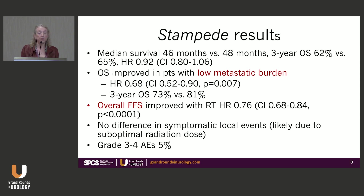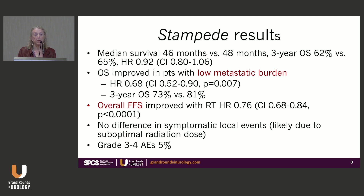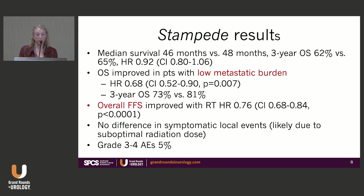They found median survival was the same in both arms — 46 versus 48 months — and three-year overall survival was 62% versus 65%, with no overall difference from treating the prostate with radiation. However, overall survival was improved in patients with low metastatic burden, with a hazard ratio of 0.68. Three-year overall survival was 73% with ADT alone versus 81% if you treated the prostate, and overall failure-free survival was also improved with a hazard ratio of 0.76.